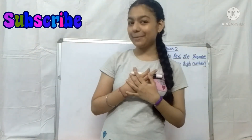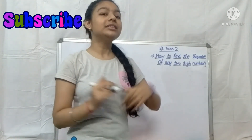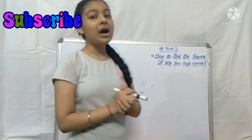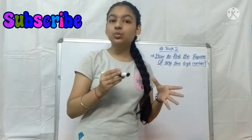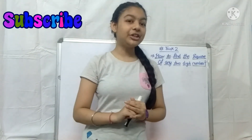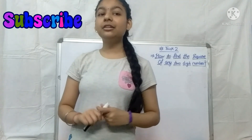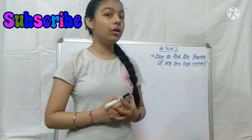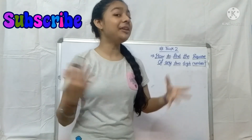Hello everyone, it's me Arunika Vish and I am back to my channel Arunika's Academy with one more interesting trick. So today we are going to start trick number 2. As in the previous video, that is the first trick which I told you — how to find the square of a number which ends with the digit 5. I hope you understood that trick clearly. So now I am back with another amazing and very helpful trick. Without wasting much time, let's get started.